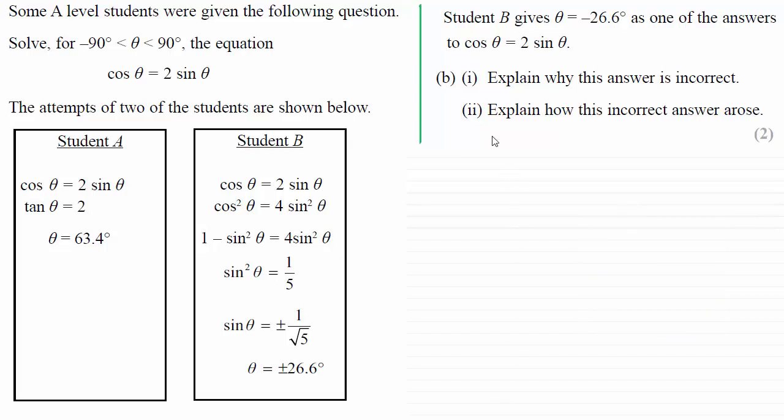Okay, so for the first part here, B part 1, explain why this answer is incorrect. That is theta equaling minus 26.6 degrees, why it doesn't satisfy this equation. Well if you substitute minus 26.6 degrees in for cos theta on the left hand side and substitute it into the right hand side, you should find that it doesn't balance, that they're not equal to one another.